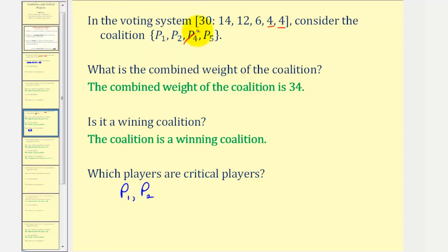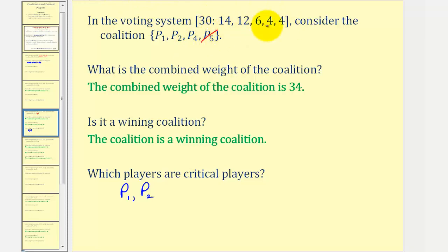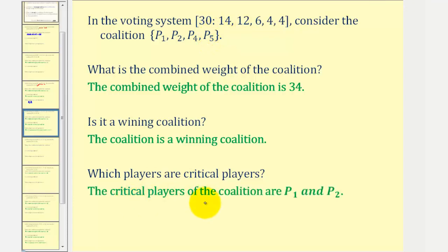Now we'll test player four. If player four leaves, the weight would be fourteen plus twelve plus four, giving a combined weight of thirty, which is the quota, so player four is not critical. If player five leaves, player five has the same weight as player four, so player one, player two, and player four still have a combined weight of thirty. Therefore player five is not critical. The critical players of this coalition are player one and player two.